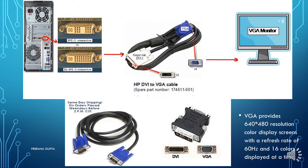If we have a DVI port, we use a DVI-to-VGA converter. We connect the DVI side to the port and the VGA side connects to the monitor. That is why it is known as a VGA monitor.